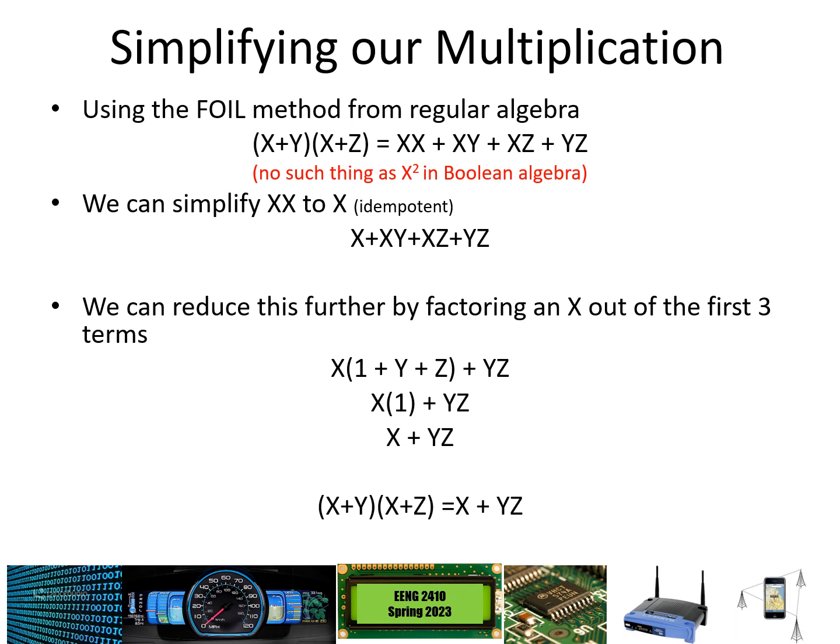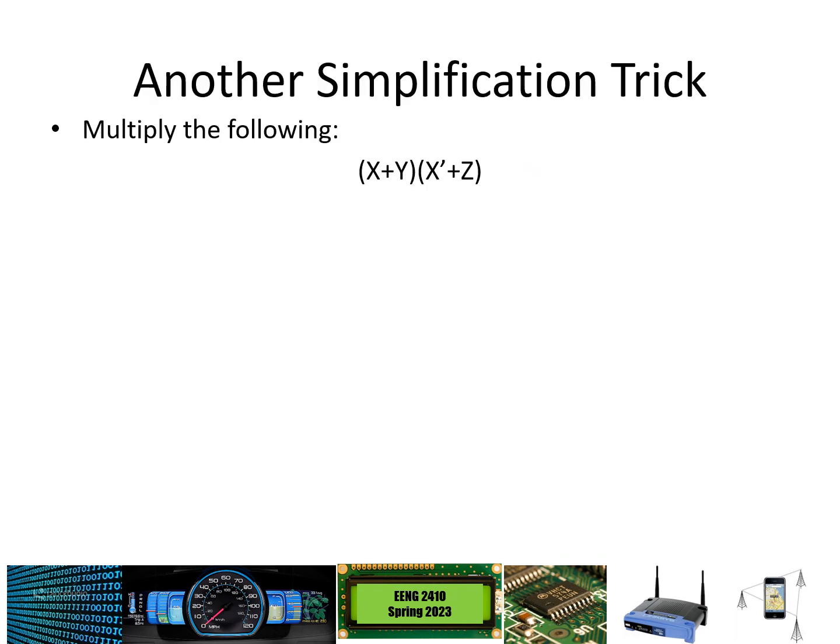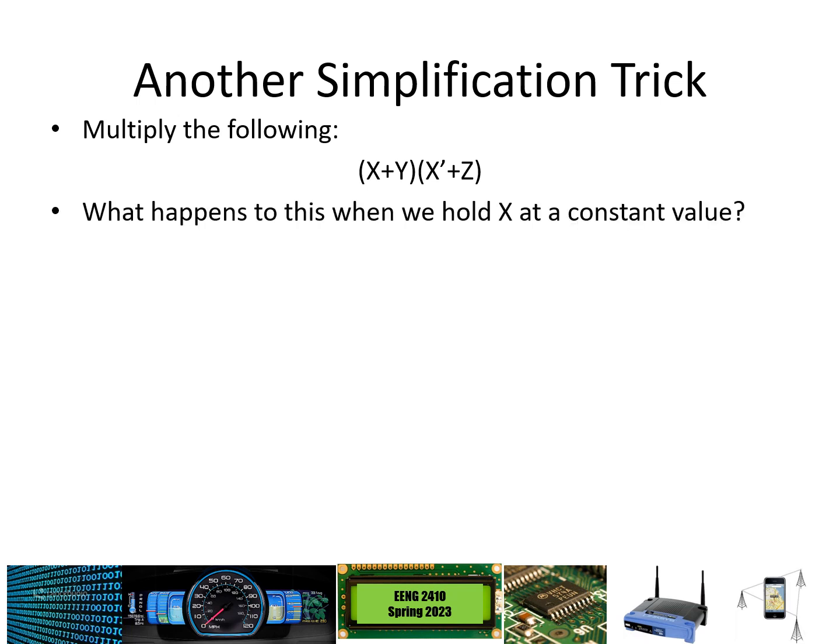So we have just demonstrated that (x OR y) AND (x OR z) can be written as x OR yz. Another simplification trick: if we multiply (x OR y) AND (x' OR z), we can think about what happens if we hold x at a constant value. If x equals 1, we put a constant 1 in for x and 0 in for x'. We get (1 OR y) AND (0 OR z), which goes to 1 AND z, working out to just z.